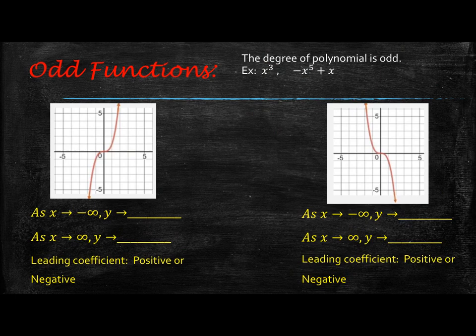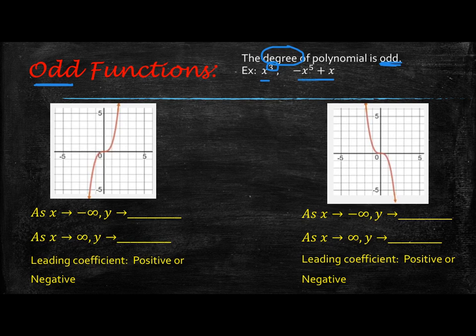Moving on — when we look at odd functions, odd functions just means the degree of the polynomial is odd. Degree is the highest exponent. So we have this example, x to the third — the highest exponent is three, and three is odd. And then we have this polynomial, negative x to the fifth plus x, which has a degree of five because five is the highest exponent, and five is odd, so that's going to be an odd function too. Now these graphs are not representative of those specific functions — they just represent odd functions.